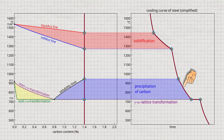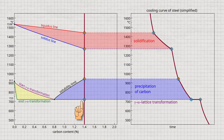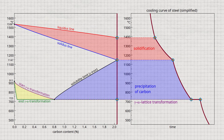The microstructural processes that take place during this process will be discussed in more detail later. As before, the gamma-alpha transformation takes place at a constant temperature of 723 degrees Celsius. At a carbon content of 2.06%, the end of solidification at 1147 degrees Celsius coincides with the solubility limit.